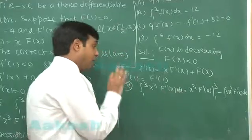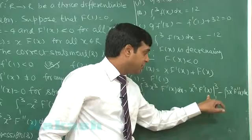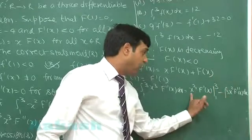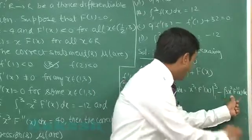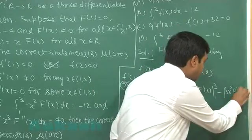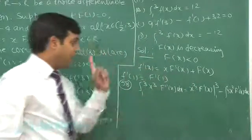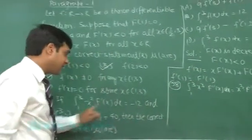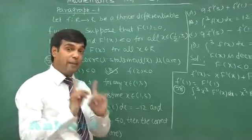When I put here values, I will get 3 cube capital F dash 3 minus 1 capital F dash 1. This one on integration we have the term here x square f dash x dx. After taking 3 common, x square f dash x dx is given to me minus 12.